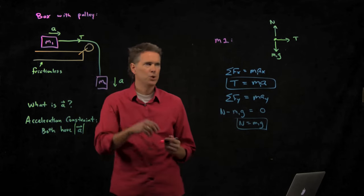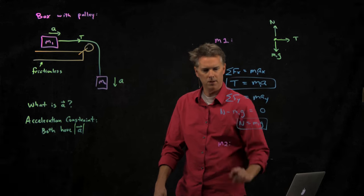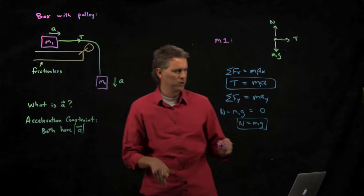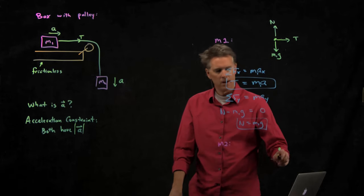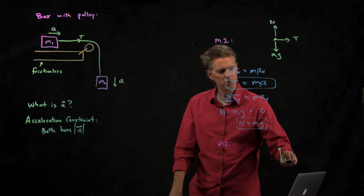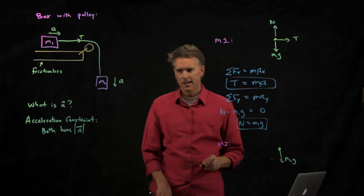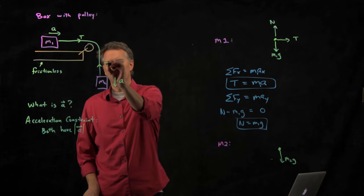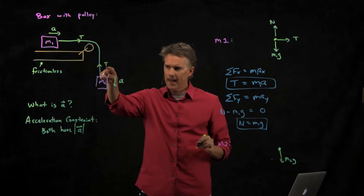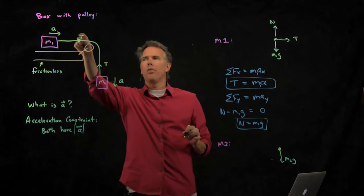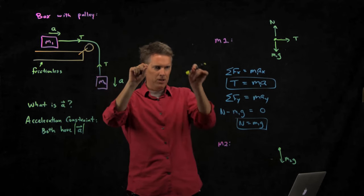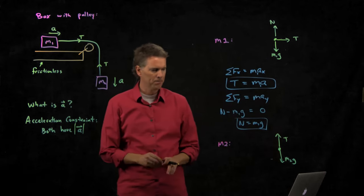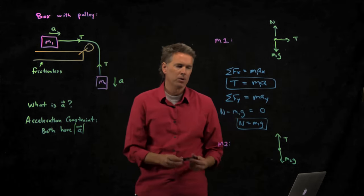What about M2? M2, it looks like we only have vertical forces to worry about. We know that M2g is going down. What's going up? Tension T. How do we know? Newton's third law tells us that that tension is the action-reaction pair with that tension. The rope transmits tension everywhere throughout it. So we have tension T going up.